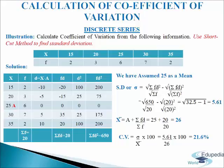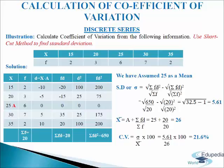In the next column we write d squared: minus 10 squared is 100; minus 5 squared is 25; 0 squared is 0; 5 squared is 25; 10 squared is 100. In the last column we write Fd squared, multiplying frequency by d squared: 2 times 100 is 200; 3 times 25 is 75; 6 times 0 is 0; 7 times 25 is 175; 2 times 100 is 200. We add up to get sigma Fd squared equals 650. Now we calculate standard deviation using the shortcut method formula and get 5.61.